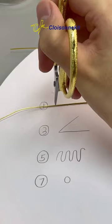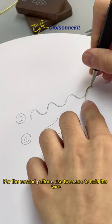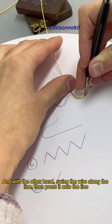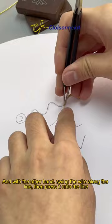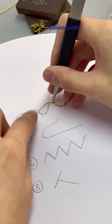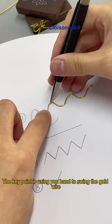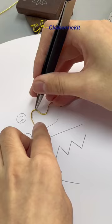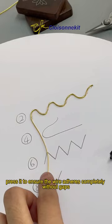For the second pattern, use tweezers to hold the wire. And with the other hand, swing the wire along the line, then press it onto the line. The key point is using your hand to swing the gold wire. Press it to ensure the wire adheres completely without gaps.